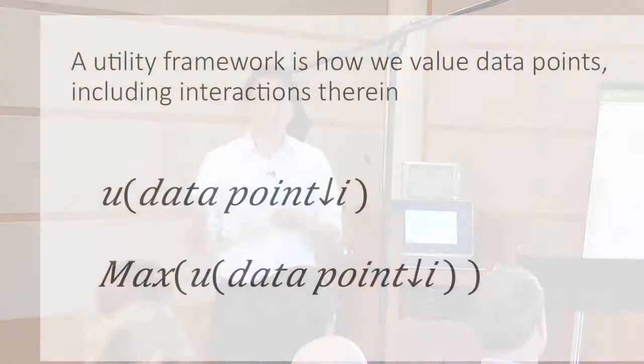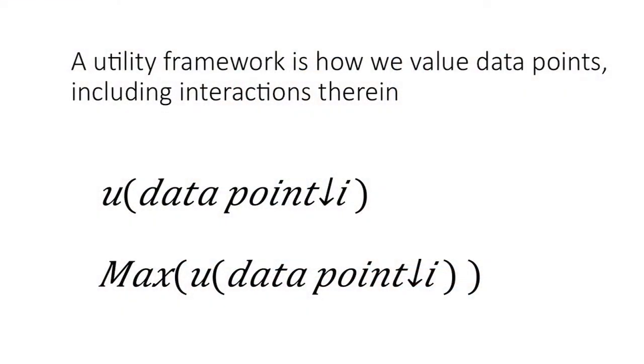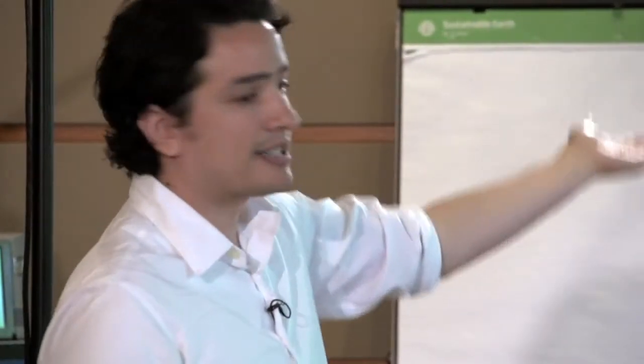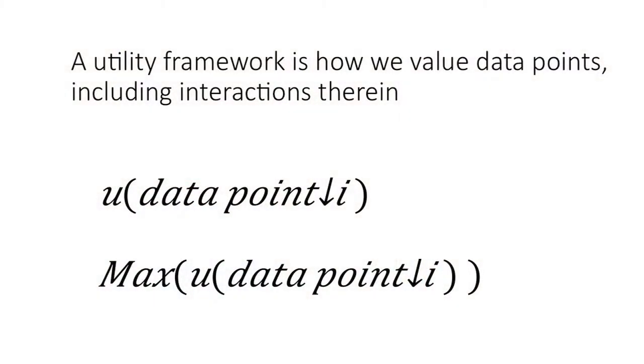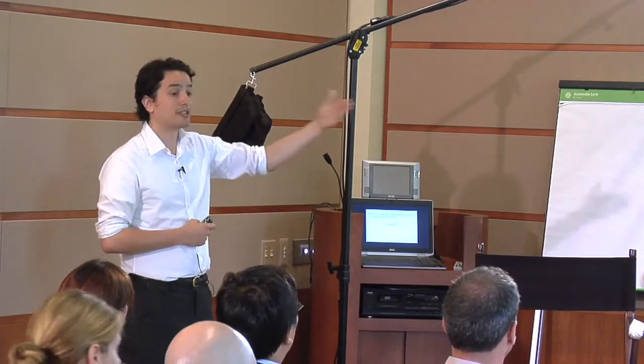A utility framework is how we value data points, including the interaction between these data points. You have a vector of a bunch of data points and a utility function — you put a bunch of data points into that and, based on the data that goes in, determine how happy we are with that cocktail of outcomes. Instead of maximizing job placements or whatever the case, we want to be maximizing over our utility framework.